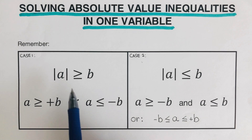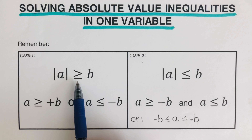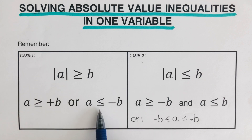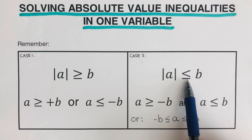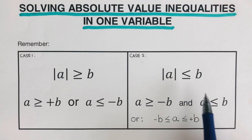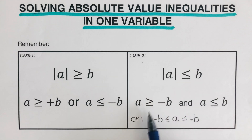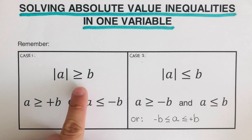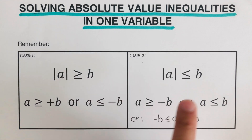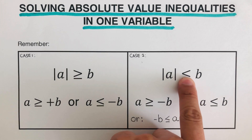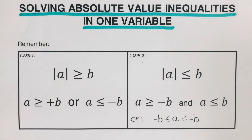A reminder: the inequality doesn't have to have a 'greater than or equal to' bar — it can just be strictly greater than, and similarly for less than. So in some cases there's no bar underneath. To summarize: case one is whenever it's greater than, and case two is whenever it's less than. Now before we jump into examples, let's remember some important information on inequalities.